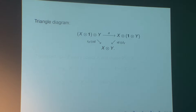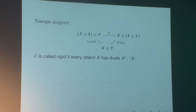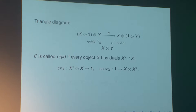We also need to require that C is a so-called rigid monoidal category, which means that every object of the category has duals — a left dual and a right dual — which are objects of the category. In the case of the left dual, it is endowed with an evaluation map that goes from the tensor product of X* with X to the unit object, and a co-evaluation map that goes from the unit object to the tensor product of X tensor the left dual, which are subject to the commutativity of appropriate diagrams.